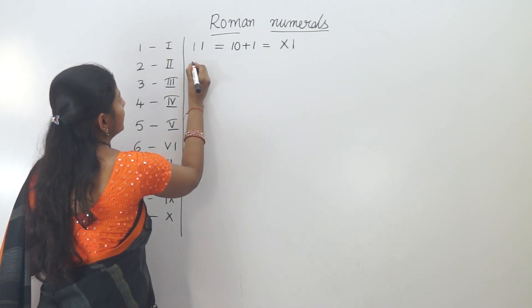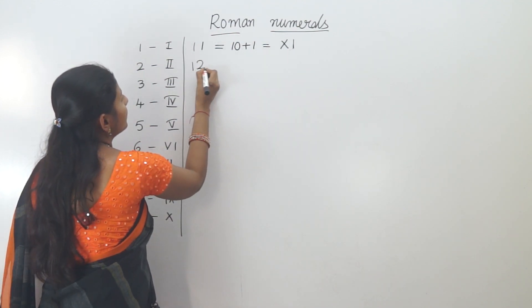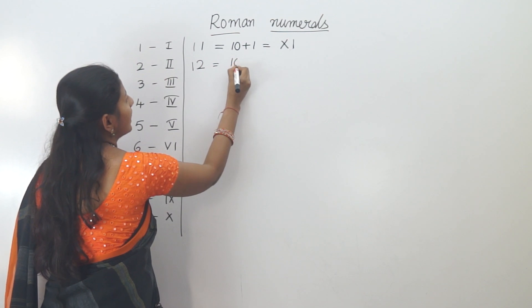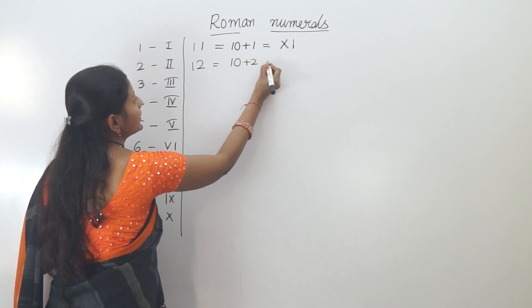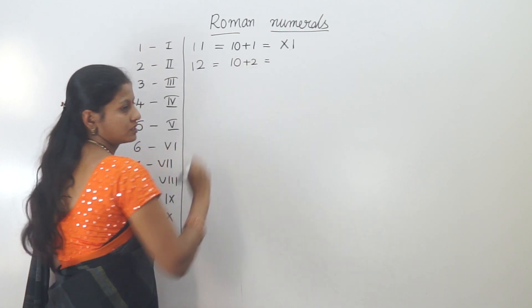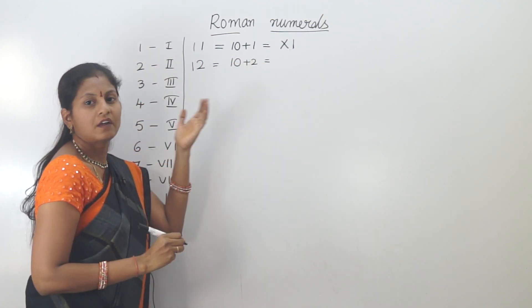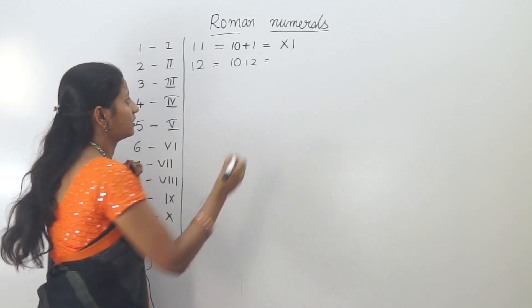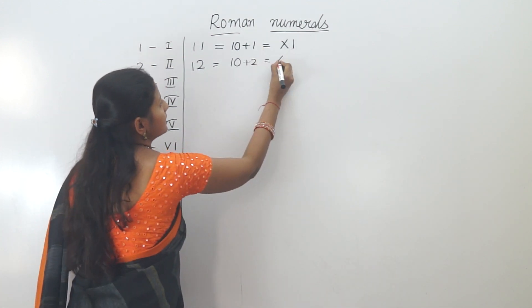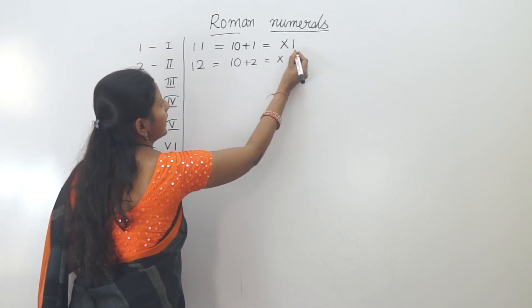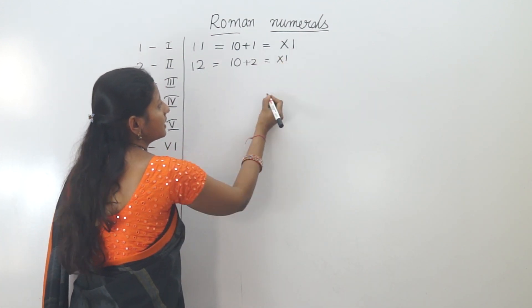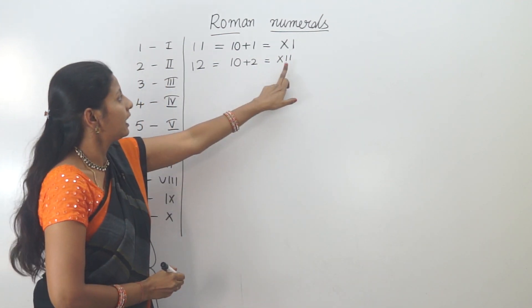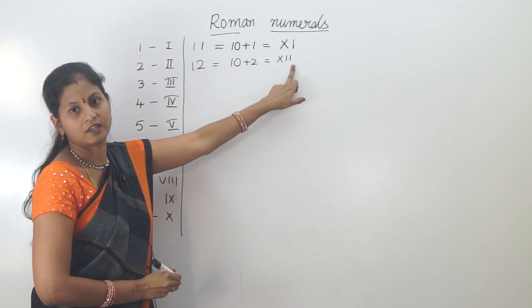Next, 12. Twelve is the same pattern: 10 plus 2. So we write X and then two I's — X, I, I — giving us 12.